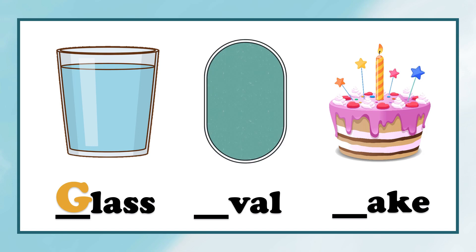How about this one? Does this begin with letter O? Correct, it's O for oval. How about this one? Does this begin with letter O? No, it begins with letter C for cake.